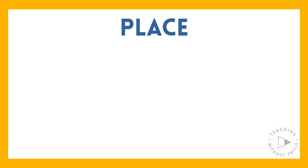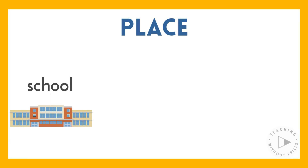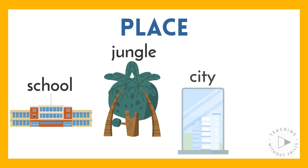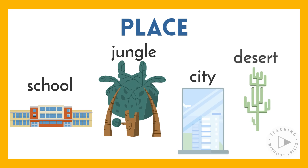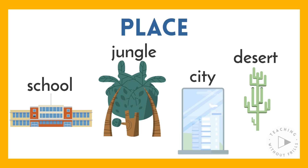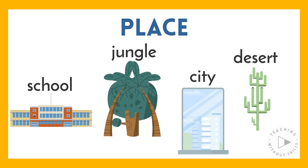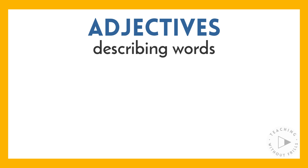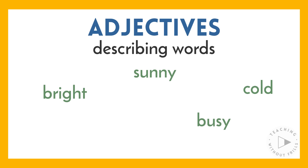A story may take place in a school, in a jungle, in a big city, in the desert, or in a variety of other places. We can also use adjectives, or describing words, to tell about the setting — like if it's sunny, cold, bright, busy, or spooky.